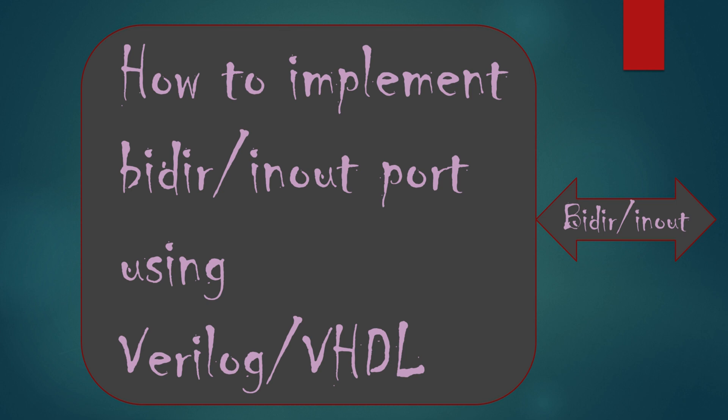In every HDL language, there is a special provision to declare a bi-directional port. For example, in Verilog and VHDL, a bi-directional port is declared with the syntax inout.